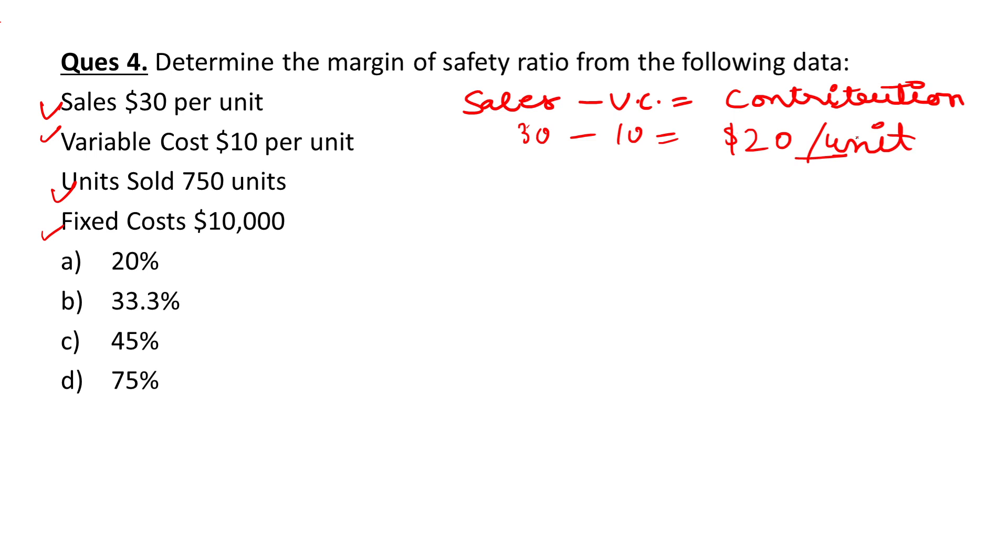How to calculate the break-even point? Simple method to calculate the BEP: break-even point is fixed cost divided by contribution. We have fixed cost of $10,000 and contribution of $20, so it comes out to be 500 units.